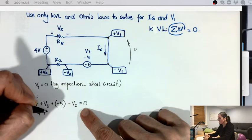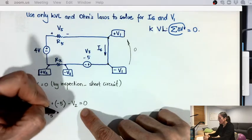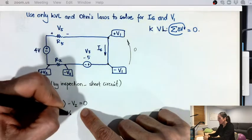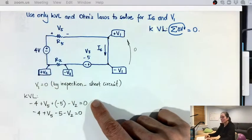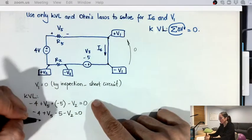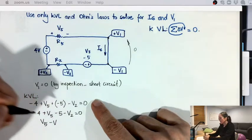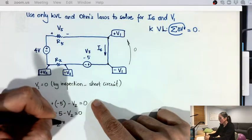Minus four, plus V5, minus five, minus V2 equals zero. So then I can change this to V5 minus V2 equals nine.